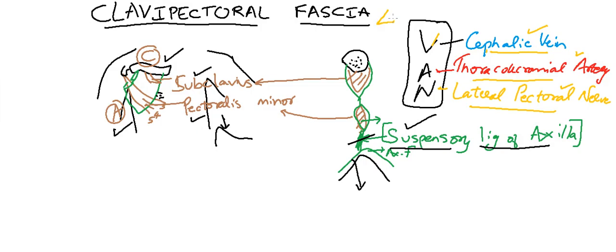Structures piercing clavipectoral fascia can be a question. In addition to this, they have one more content. The lymphatics from the mammary gland. Lymphatics from the mammary gland going towards the apical group of axillary lymph nodes. The lymphatics from mammary gland is a content which pierces the clavipectoral fascia.